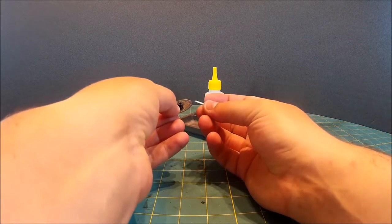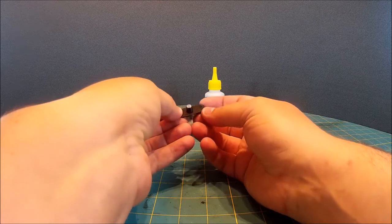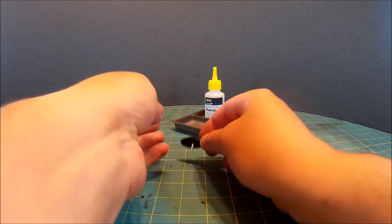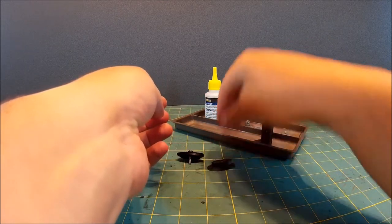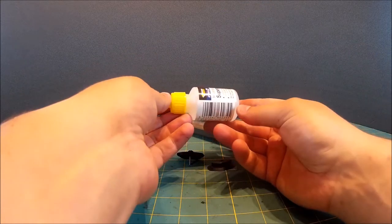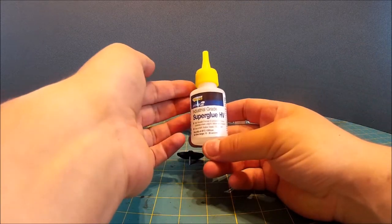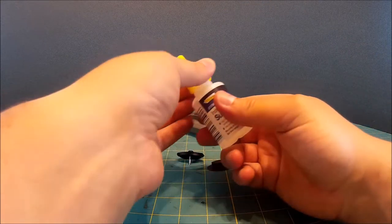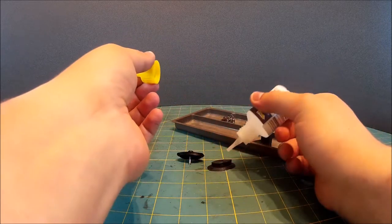So we reinforce all of this and hold it together with a screw so that the plastic doesn't shear. And then what we do is we use some super glue to hold these things together. Just for the record, I always have some de-bonder on hand.